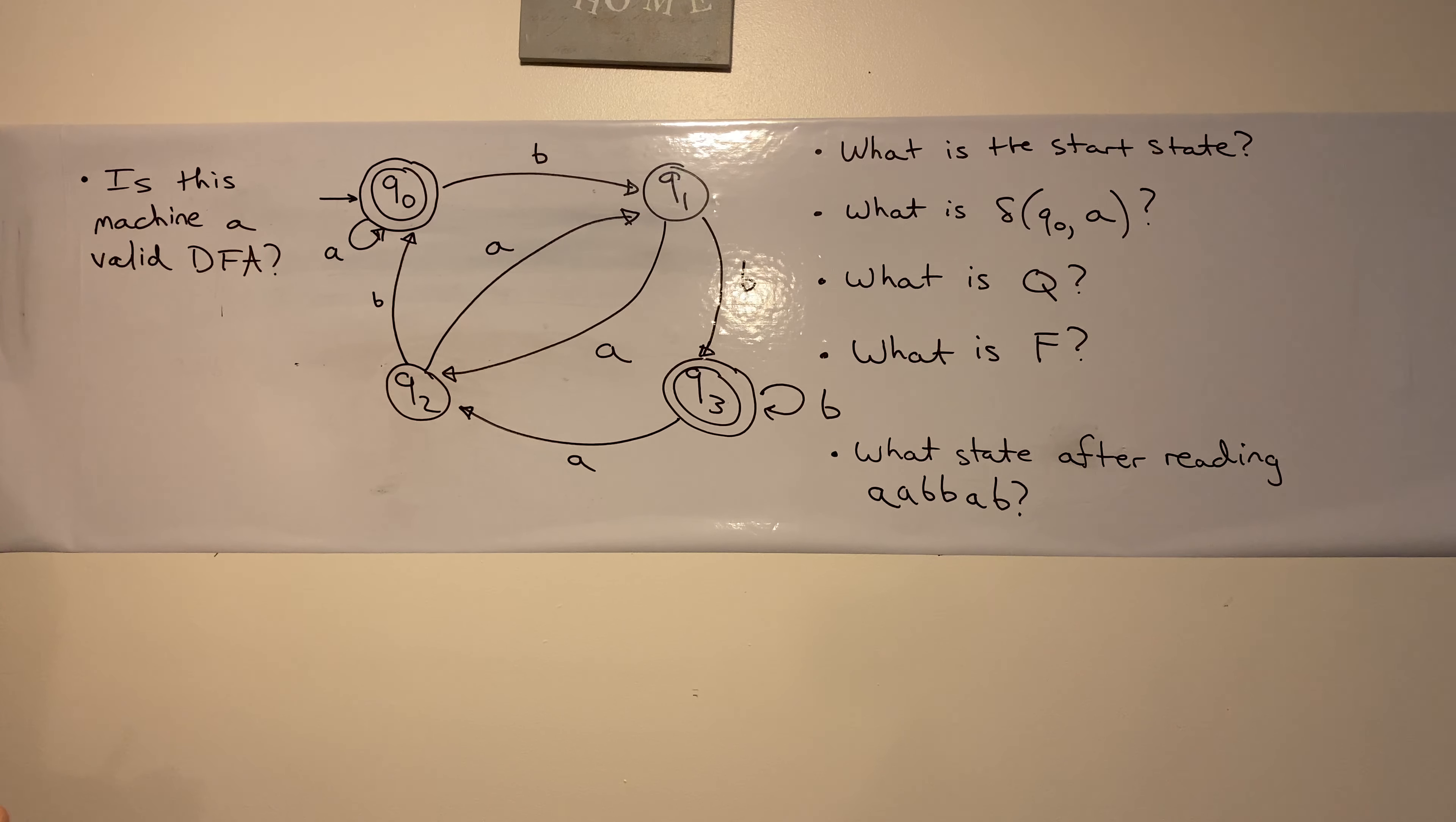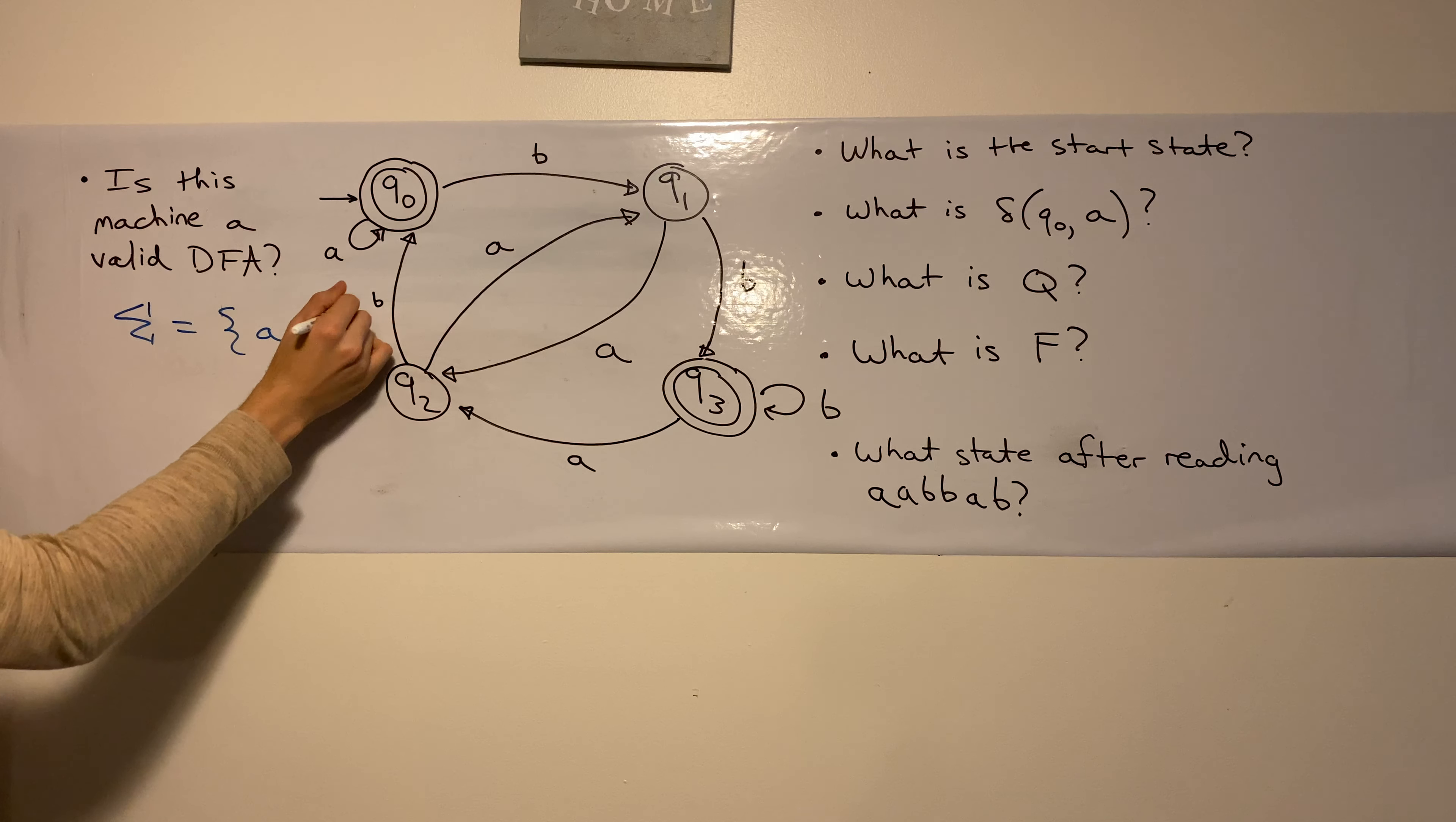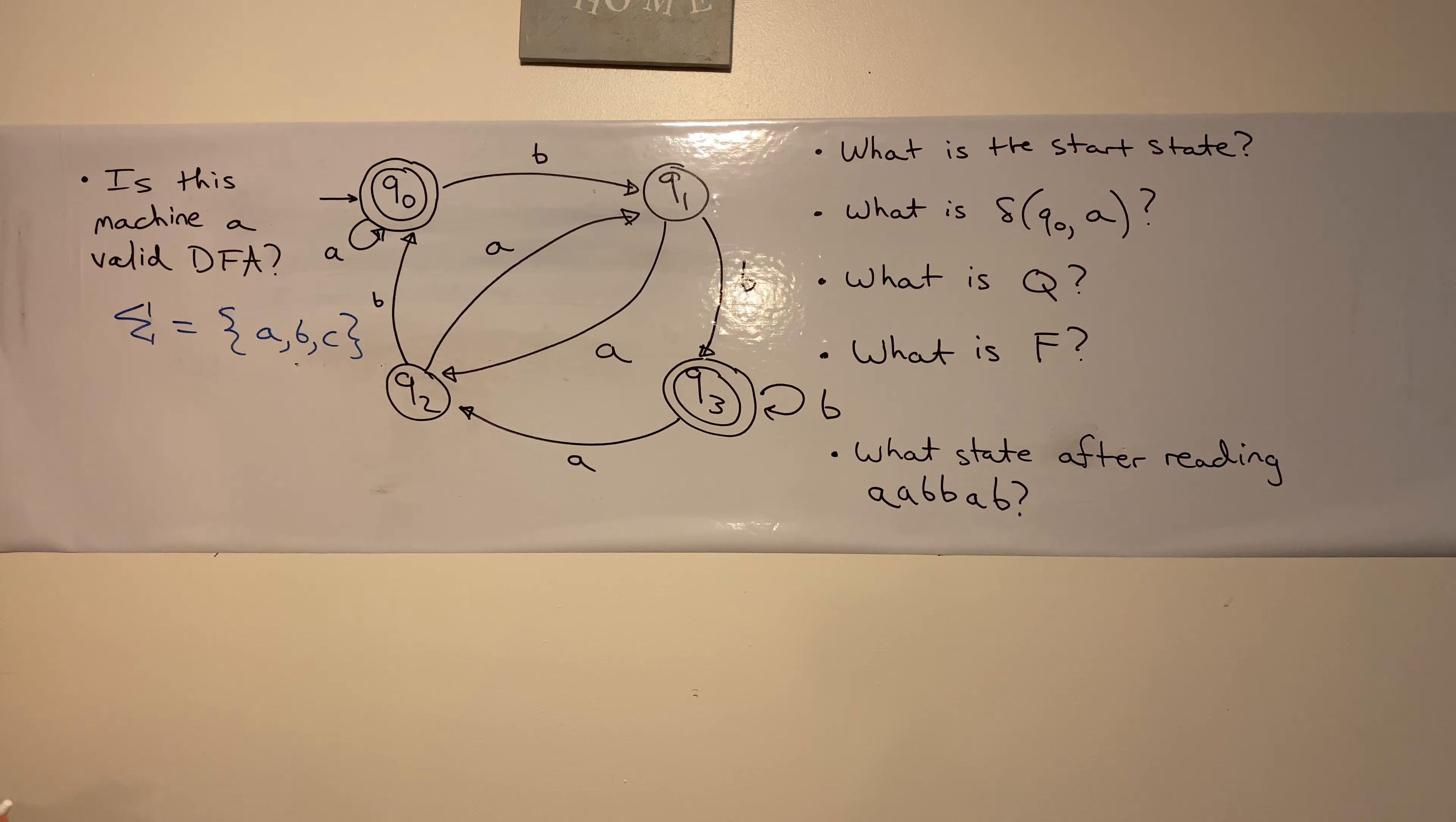However, suppose that the input alphabet sigma is instead A, B, and C. Well, none of the states here have a transition on input C, so it wouldn't be a valid DFA.